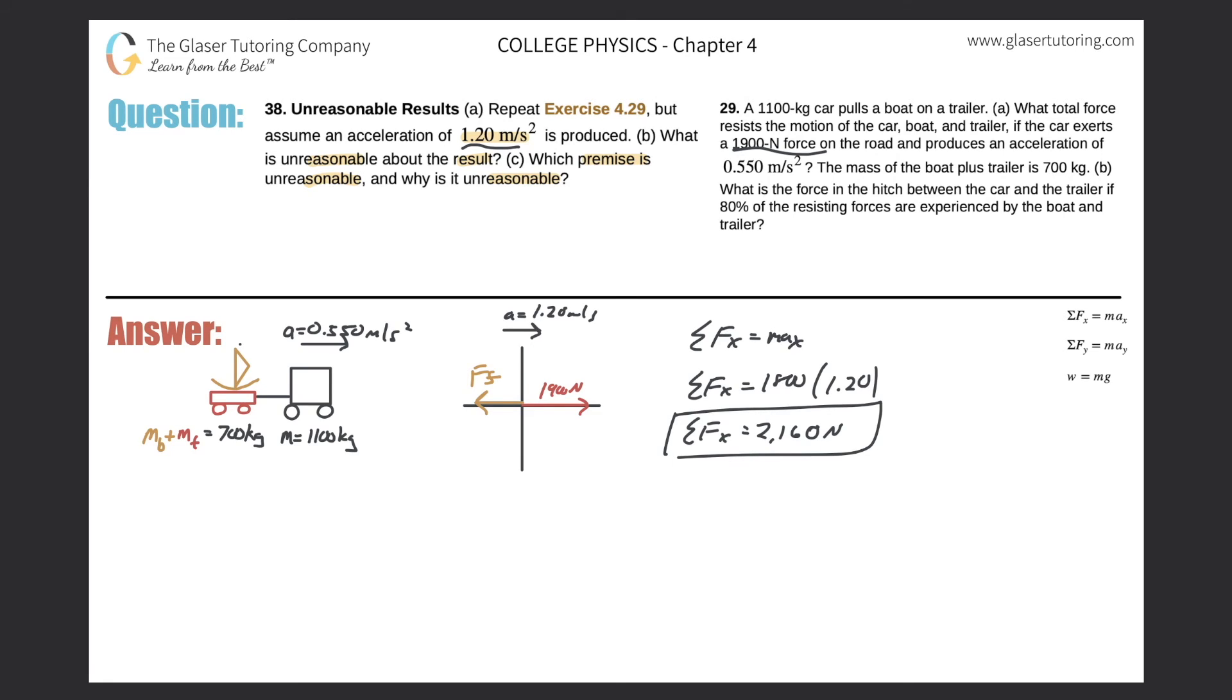So that's what's unreasonable, that answers letter B. And then C says what premise is unreasonable? I don't know, there could be a couple of premises. Maybe they measured the acceleration wrong, maybe it's not 1.20 meters per second squared.